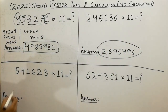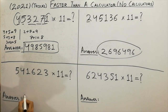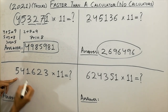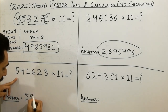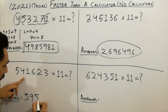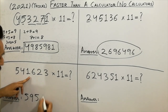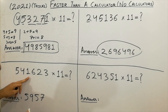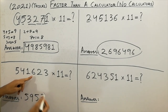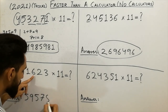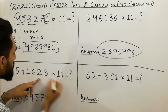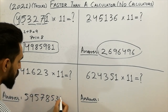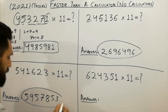And similarly, the third example. Write the first digit: 5, as it is. Then 5 plus 4 equals 9. Then 4 plus 1 equals 5. Then 6 plus 1 equals 7. Then 6 plus 1 equals 7. Then 6 plus 2 equals 8. Then 2 plus 3 equals 5. And at the last, write the value 3. That's it.